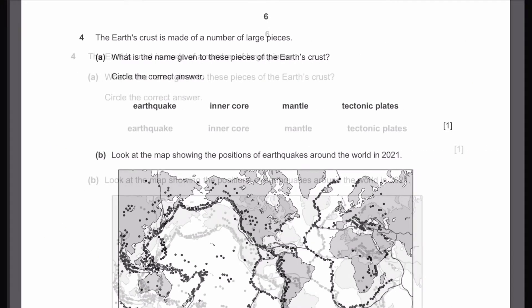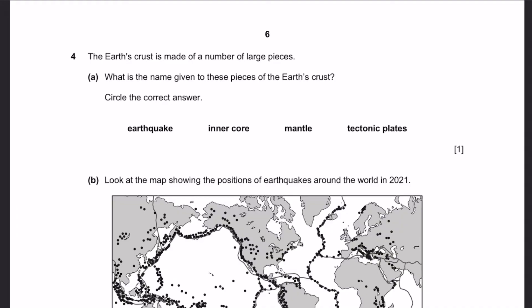Let's go to question 4. The Earth's crust is made of a number of large pieces. Part A: What is the name given to these large pieces of the Earth's crust? Circle the correct answer. Well, the answer is tectonic plates. This is literally the definition of tectonic plates.